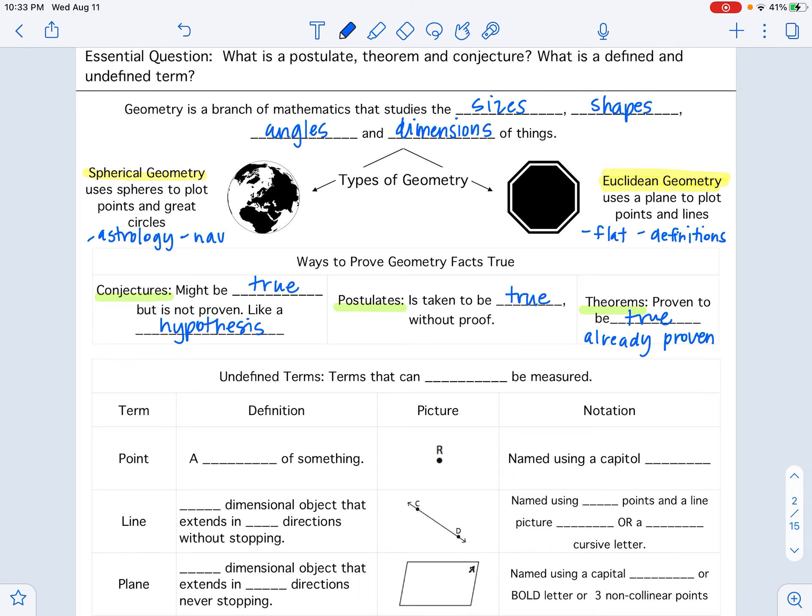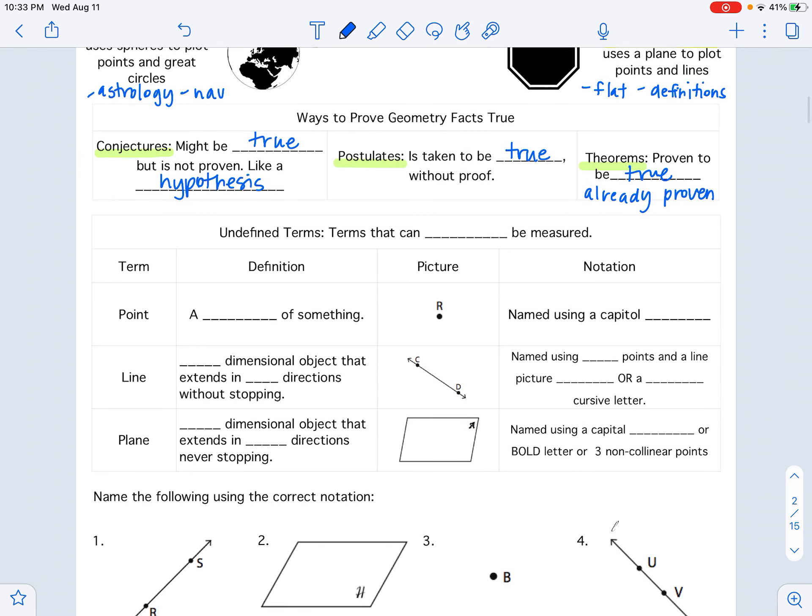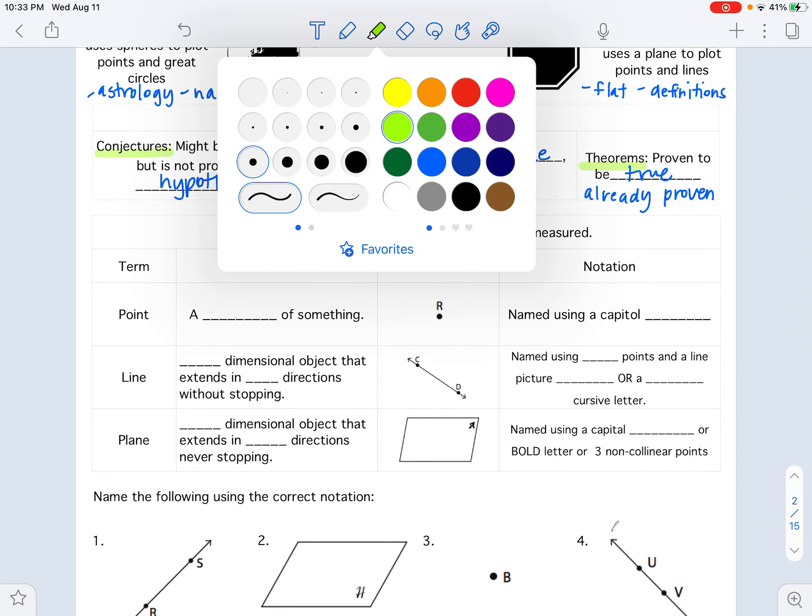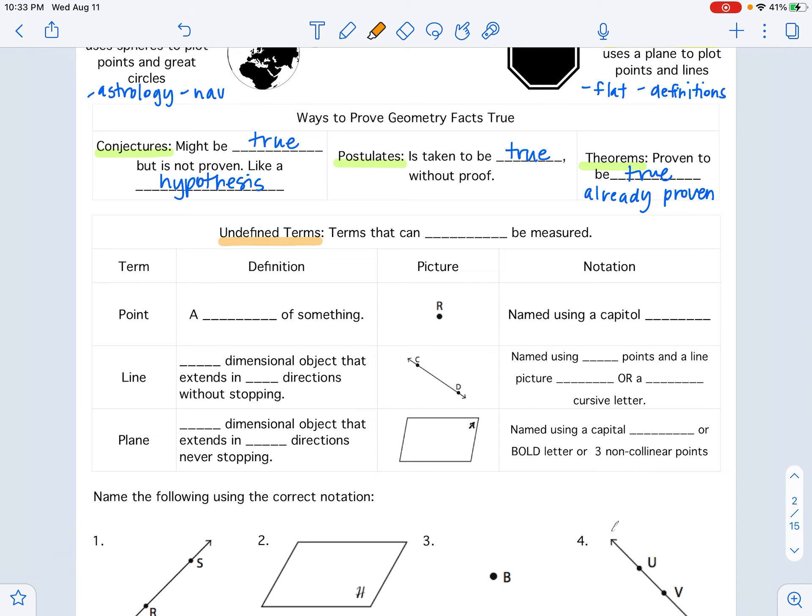In geometry, we also have things called undefined terms and defined terms. Undefined terms are terms that cannot be measured. So think about things that can be measured. Like I would be able to say that something is six feet away. Undefined terms are things that you cannot say that about. So three main ones, points, lines, and planes. You can't measure a point. You cannot measure a line because it goes on forever. And a plane also extends on forever. So you cannot measure them.